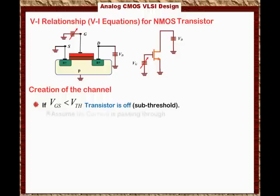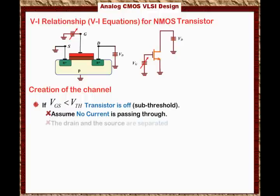We assume there is no current through the transistor. But as stated earlier, when it comes to practice — when you design the circuit for physical manufacturing on the wafer — this sub-threshold region will cause leakage current, so you have to account for it. But for now, this is a very important remark: we assume that if VGS is less than the threshold voltage, the transistor is off. That means the drain and source are separated because there isn't a continuous path for current to flow.